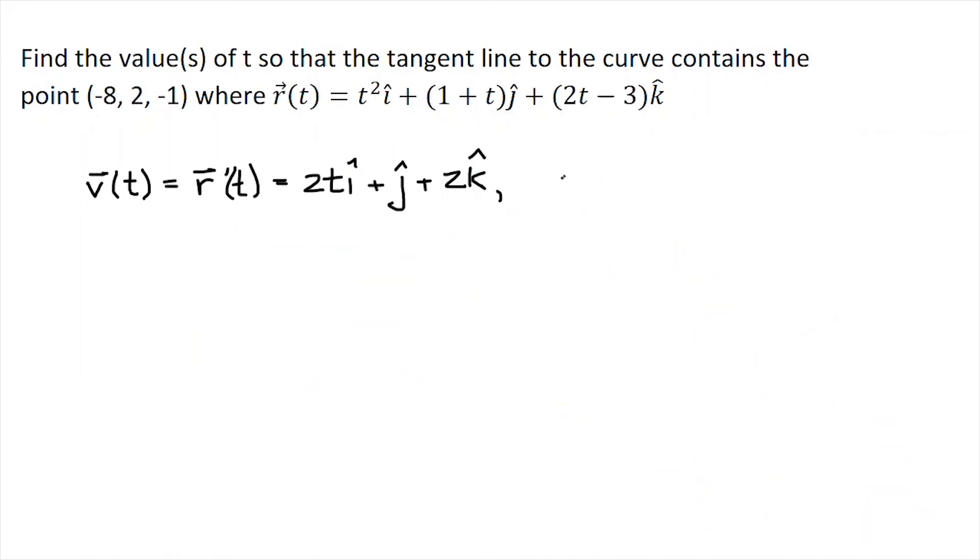I'm going to let that point of tangency be a specific value, I'm going to call that a. So a is that moment in time where I get my point of tangency. I'm going to plug that into my position vector, and that is going to give me a²i + (1 + a)j + (2a - 3)k.